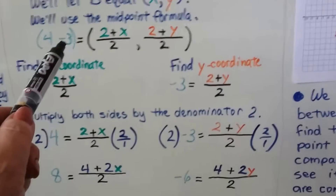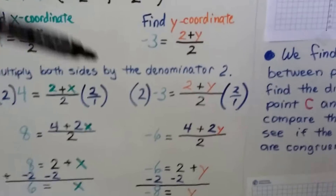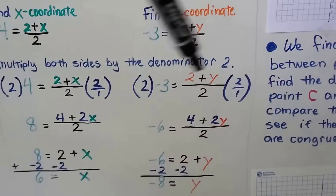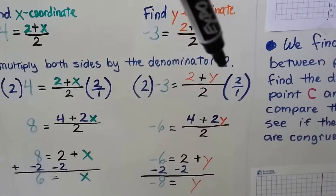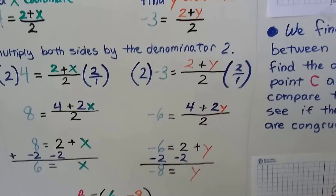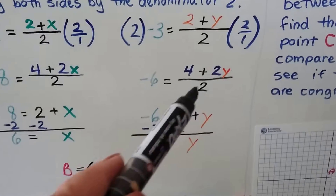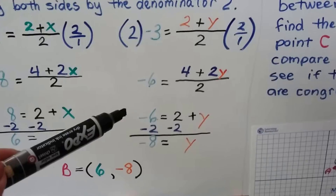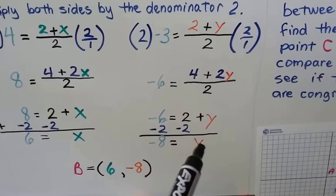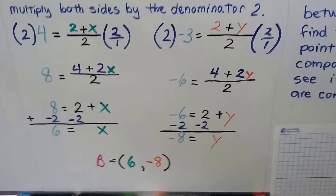For the y-coordinate, -3 = (2 + y)/2. Multiplying both sides by 2: -6 = (4 + 2y)/2, which simplifies to -6 = 2 + y. Adding -2 to both sides gives us -8 = y. So point B is at (6, -8).